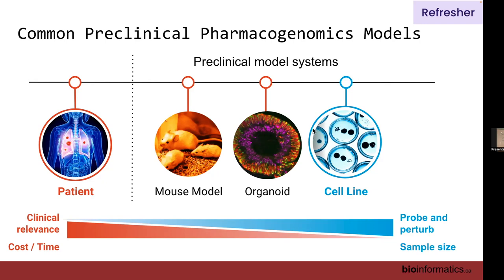The order of operations is: you do your biomarker discovery in preclinical models and start validating, and hopefully you get a biomarker robust enough that you can confidently assess in patients. Most of this is going to be retrospective.